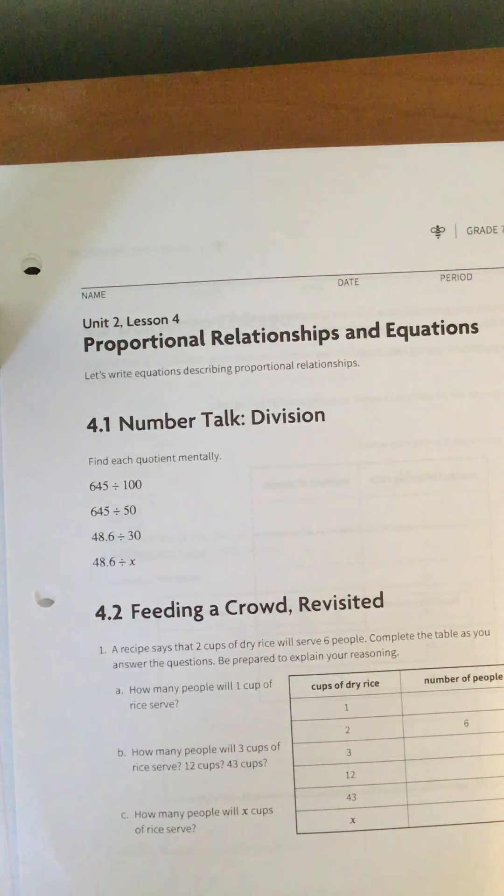Alright, so we are on Unit 2, Lesson 4, Proportional Relationships and Equations. Our learning goal is to write equations describing proportional relationships. We've been doing proportional relationships in tables, and now we're going to take it to an equation. And it's really very, very simple.